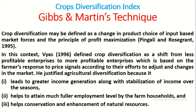Bass defined crop diversification as a shift from less profitable enterprises to more profitable enterprises, which is based on the farmers' responses to price signals according to their efforts to adjust to changes in the market. He justified agricultural diversification because it leads to greater income generation along with stabilization of income over the seasons. This means farmers choose agricultural diversification to gain profit throughout the year so that one region is not forced to avoid gaining income.